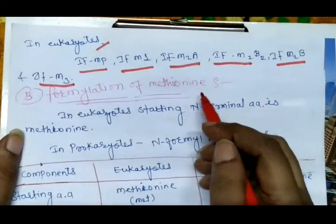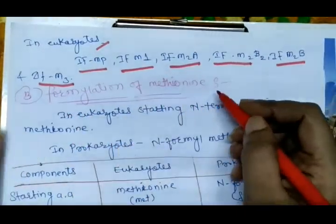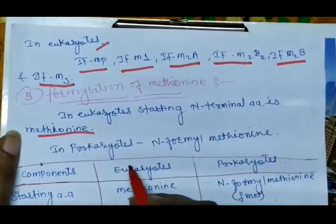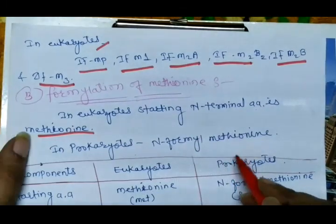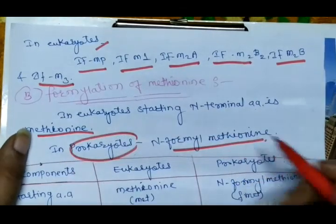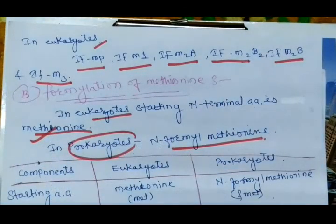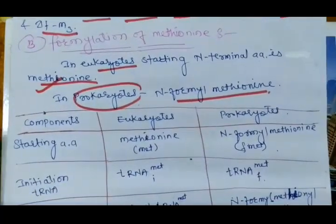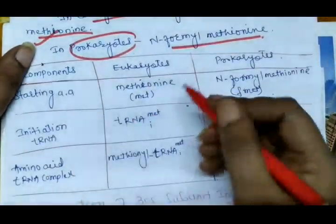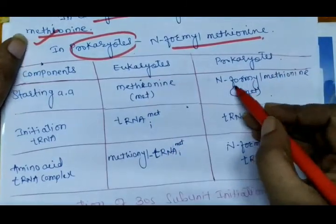For the initiation of protein synthesis, the starting amino acid is also important. In eukaryotes, the starting N-terminal amino acid is methionine (MET). In prokaryotes, N-formyl methionine (fMet) is the starting amino acid and is necessary to start protein synthesis.